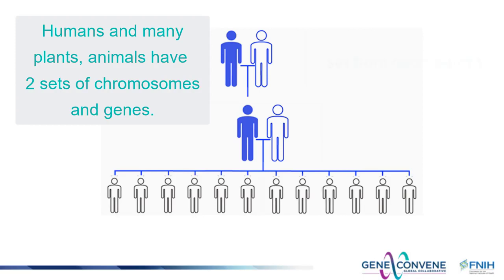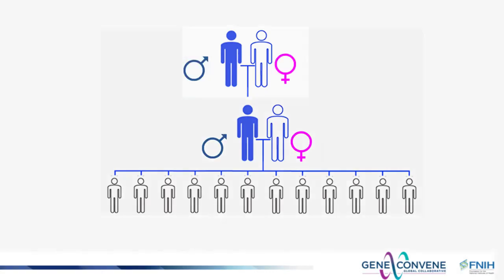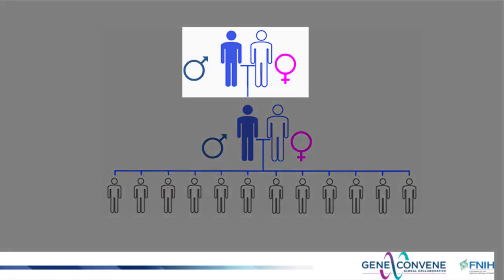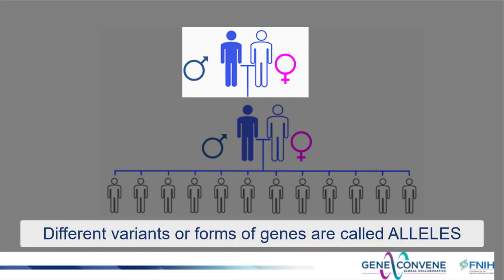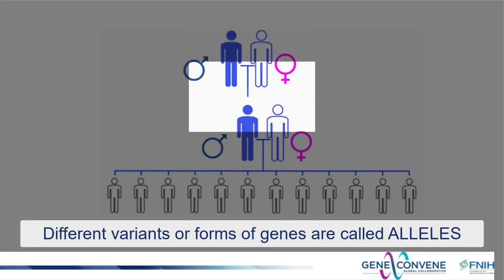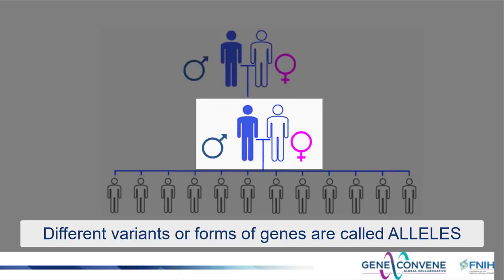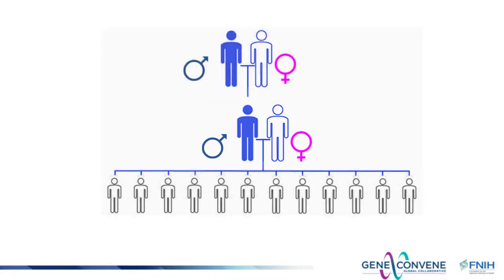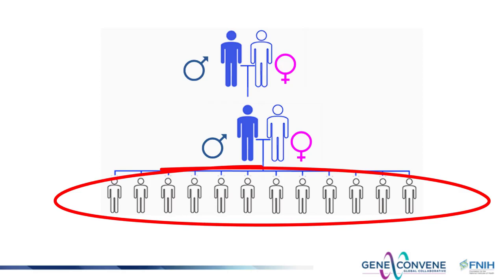Let's begin by thinking generally about patterns of inheritance — say a family tree, for instance. Have a look at this family tree. In generation one, the man with a single blue form of a gene marries a woman with the white form of the same gene, and they have a son who inherits the blue form of the gene from his father. He now marries a woman with the white form of the gene and they are planning on having a very large family. How many of their anticipated 12 children should they expect to have the blue form of the gene?